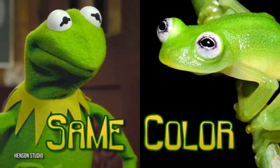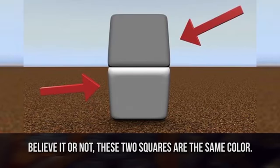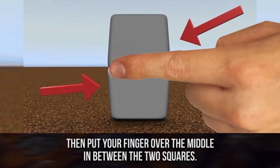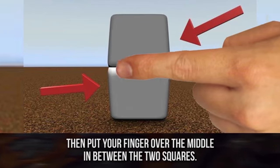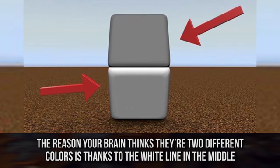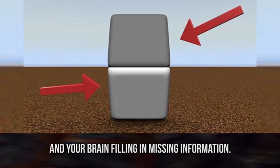Same Color. Believe it or not, these two squares are the same color. Don't think so? Then put your finger over the middle in between the two squares. You'll see what we mean. The reason your brain thinks they're two different colors is due to the white line in the middle and your brain filling in missing information.